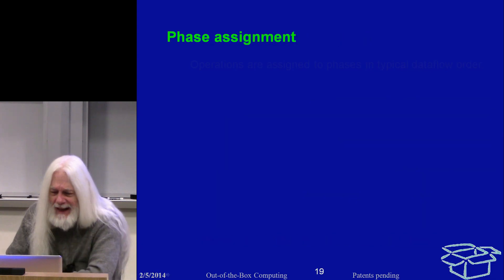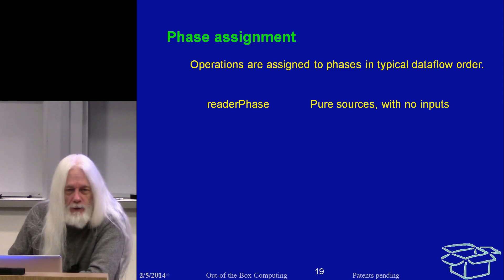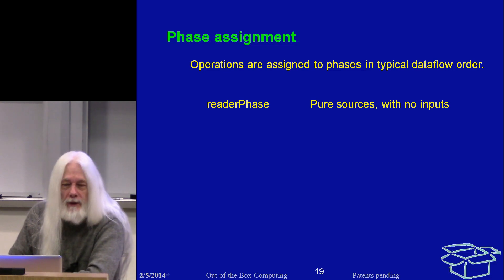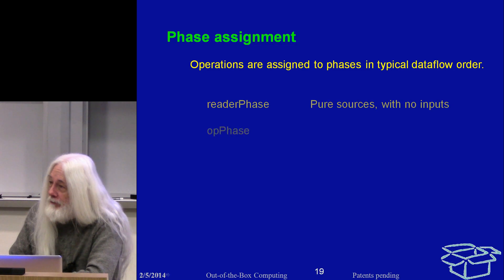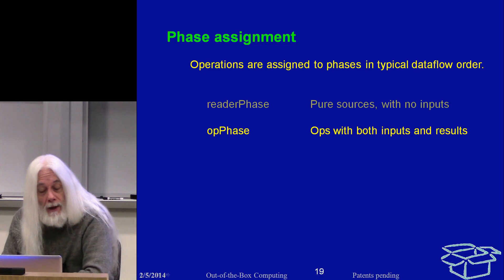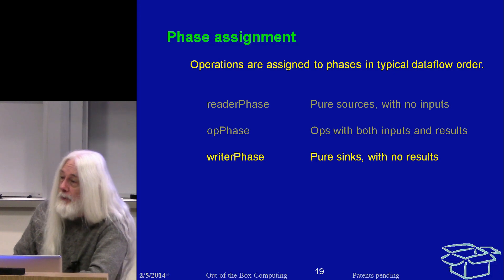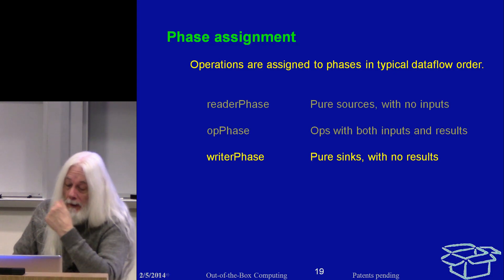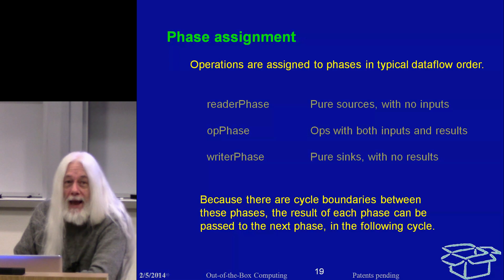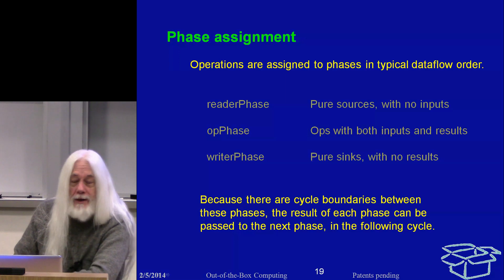Phase assignments: those operations assigned to reader phase are all those that don't need any inputs — they can be done as soon as they're decoded. Op phase operations need inputs and also produce results that somebody will consume. Writer phase are pure sinks — things that grab values but do not pass them to anybody else. There are cycle boundaries between these, and as a result each phase can pass to the subsequent phase even though they're in the same instruction, because they issue at different times.